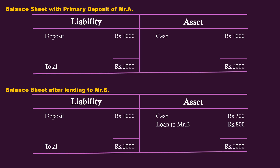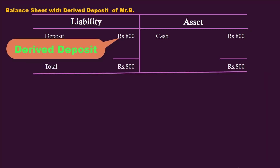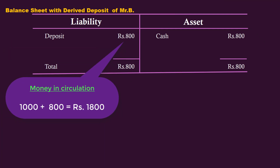After this derived deposit, that part of the balance sheet shows a new deposit of 800 rupees. In estimating the supply of money, we do not make any difference between primary deposit and derived deposit — a deposit is a deposit; it is money. The money in circulation is 1000 plus 800, which equals 1800 rupees.